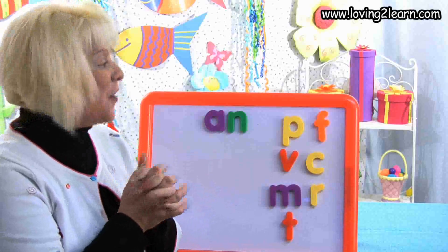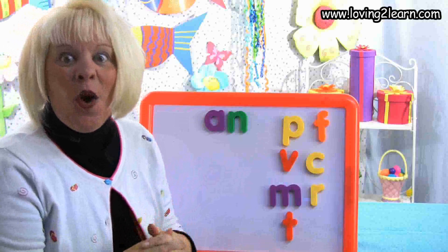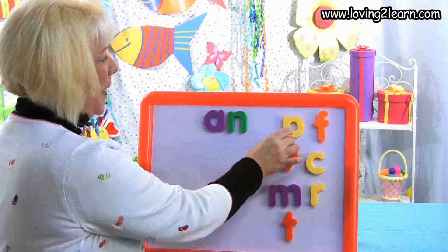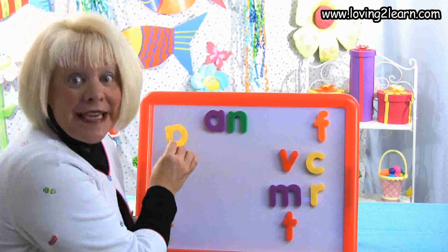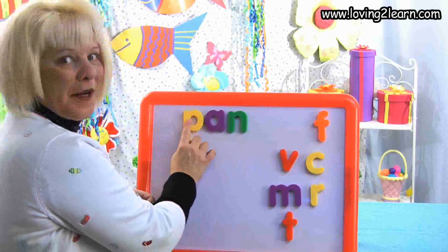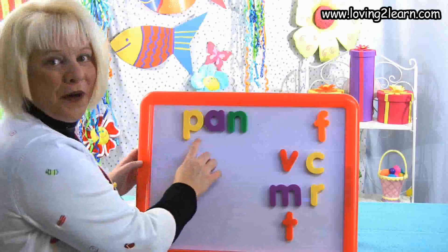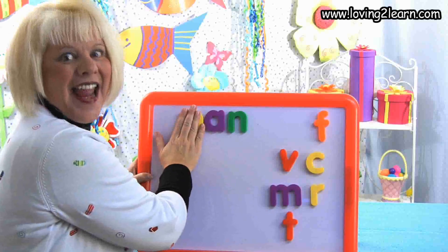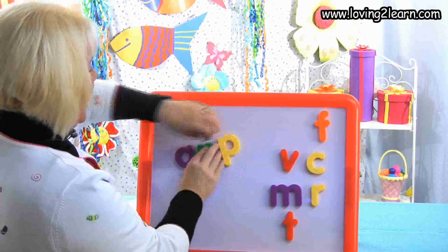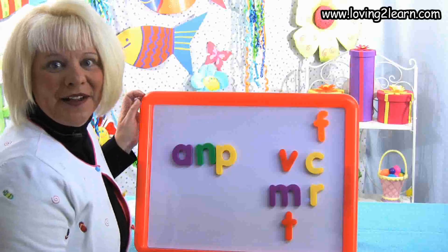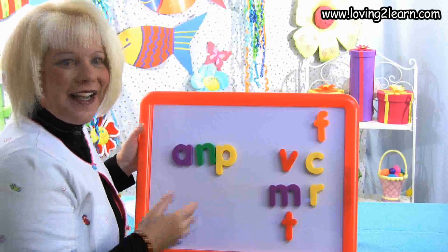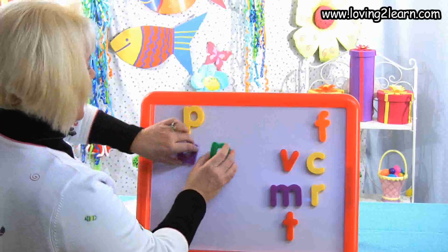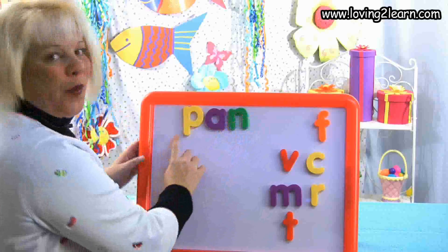I want to make the word pan. What letter will I need? P-P-P — that P, that's right. I put the P at the beginning of the word: P-A-N. There's the word pan. What chunk is in the word pan? AN. I'm going to mix that word up. Let's make the word pan again — P-A-N. There's that AN chunk, A-N. We have the word pan.